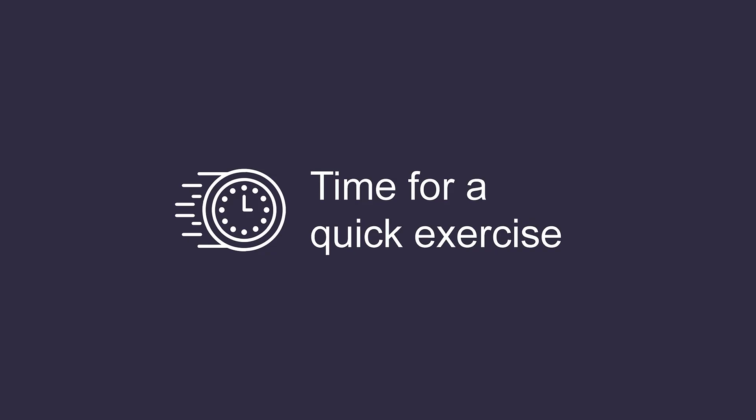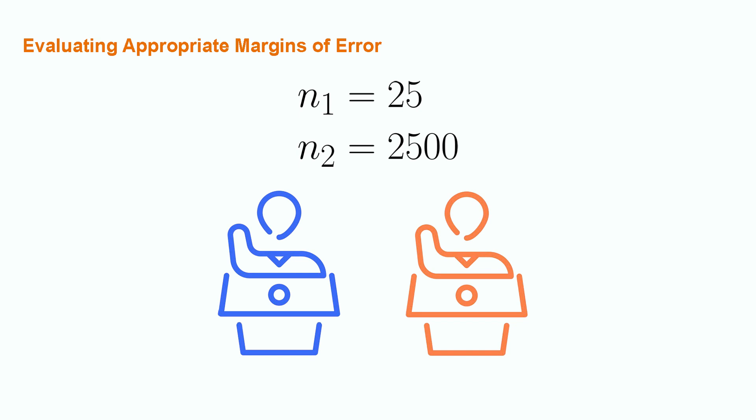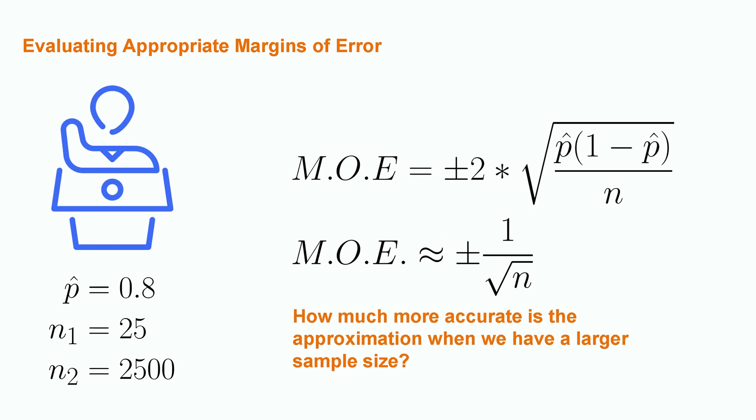Let's see how this works out exactly for our poll examples. Let's say that we have done two polls, one with 25 voters and one with 2,500 voters. In both of these, the polling returned an 80-20 split in favor of the blue candidate. From the perspective of the blue candidate, let's use both the regular expression and the 50-50 approximation for the margin of error and determine how much more accurate the approximation is for the large sample size. Try to work out these values on your own.